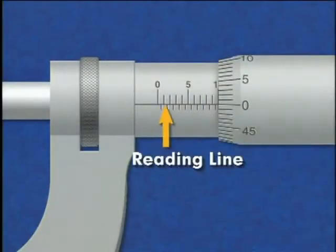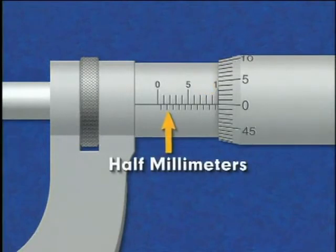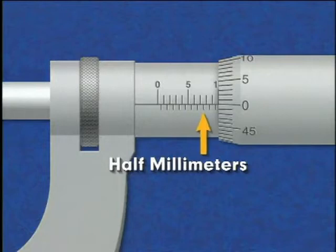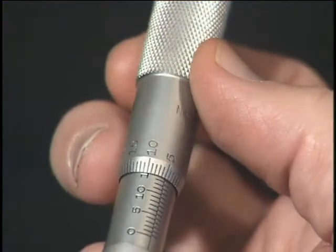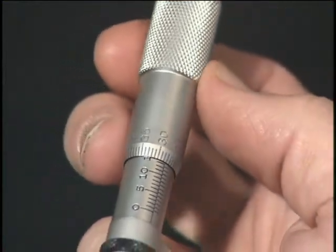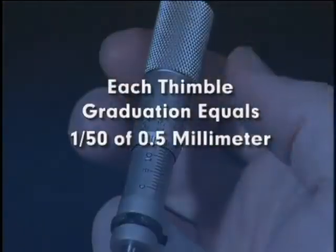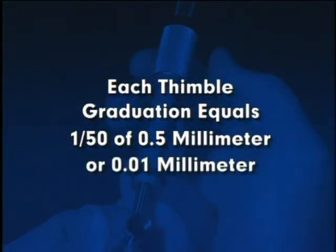The micrometer has a reading line on the sleeve. The vertical graduations on the top of the reading line each represent a single millimeter. The vertical graduations below the reading line indicate half millimeters. The beveled edge of the thimble is graduated into fifty divisions. Since a single revolution of the thimble moves the spindle one-half millimeter, each thimble graduation equals one-fiftieth of one-half millimeter, or one one-hundredth of a millimeter.